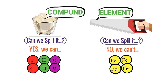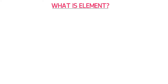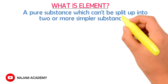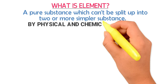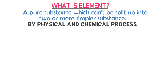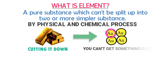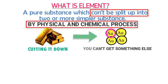Now we should thoroughly learn what an element is. An element is defined as a pure substance which cannot be split up into two or more simpler substances by any physical or chemical process. For instance, if you take a piece of gold and start cutting it down, you will still get smaller particles of gold — you cannot get something else. Thus, we say that we cannot split up an element by any physical or chemical process.